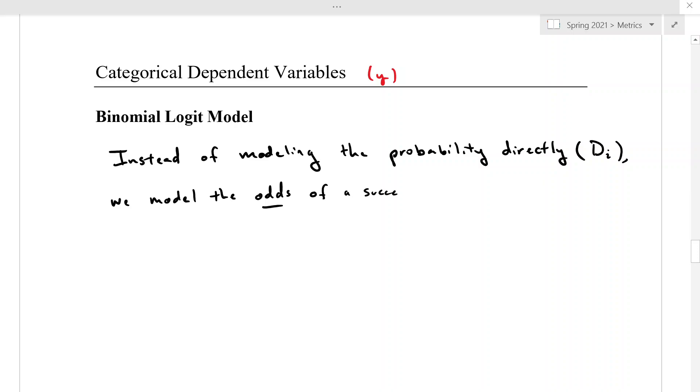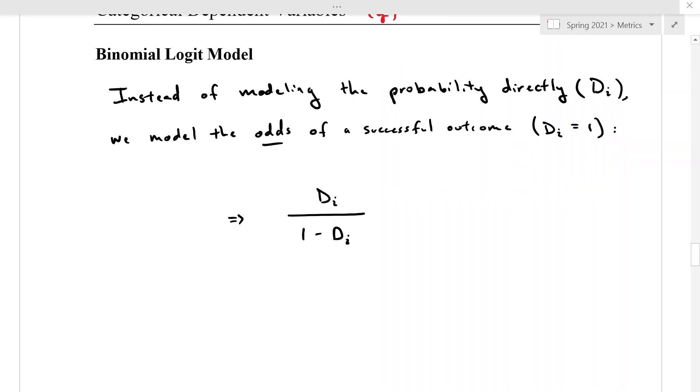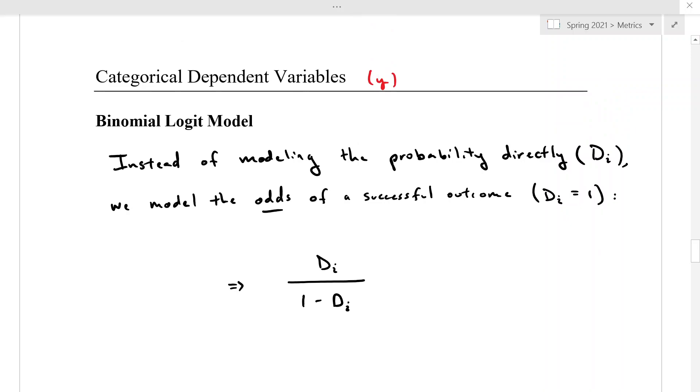Okay, so we're going to be modeling the odds of DI being equal to 1. And the way we think about that is the odds of something happening is the probability of it happening divided by the probability of it not happening. And when we take the log of those odds, that's going to give us our logit model.